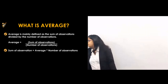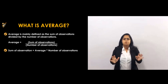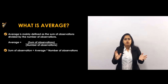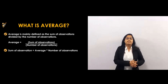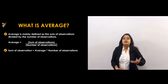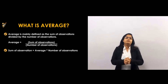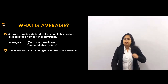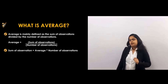What is average? Average is nothing but the mean. Whenever there are a number of observations, the average is the sum of all observations divided by the number of observations. For example, if there are five subjects, you add all five marks and divide by five — that gives you the average marks.